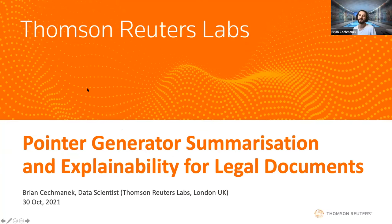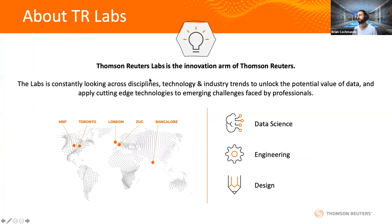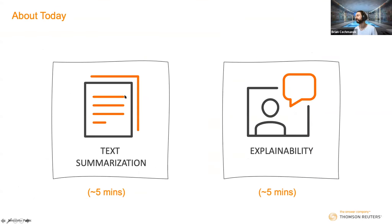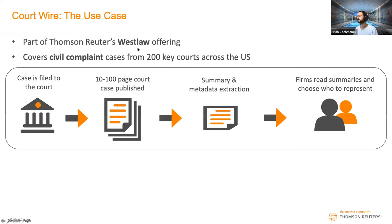The use case: most people know Thomson Reuters for Reuters news, but the largest part of the business is products for tax and legal professionals. One product called Court Wire helps legal professionals monitor new legal cases as they arise across the US, getting them to publication as quickly as possible — usually about two weeks before the court docket. A court case is filed, a hundred-page document is published, it goes to expert legal editors who write a summary and extract metadata, then publish to clients who choose which cases to represent.